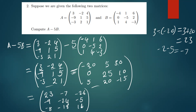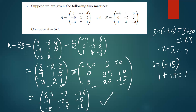This is the solution to the first question, A minus 5B. The last entry: 1 minus negative 15 — the two negatives make a positive, so 1 plus 15 gives positive 16. Matrices are very simple — let's move on to the next question.